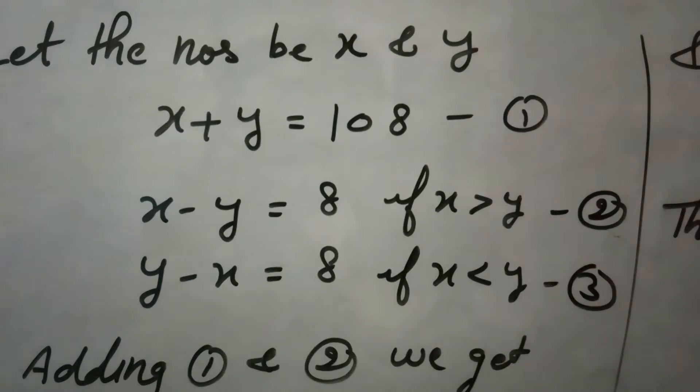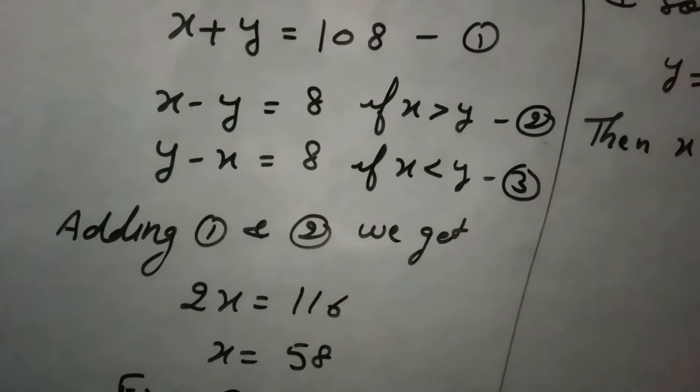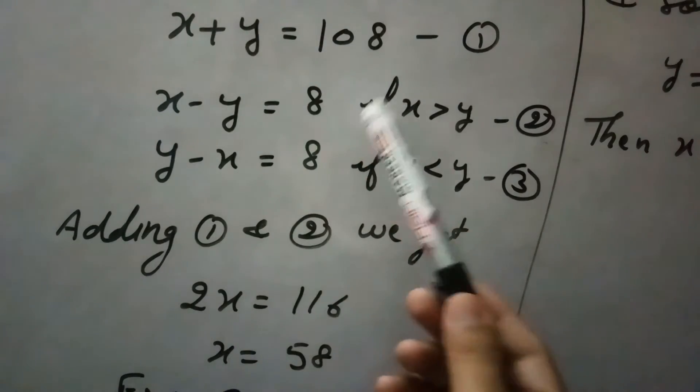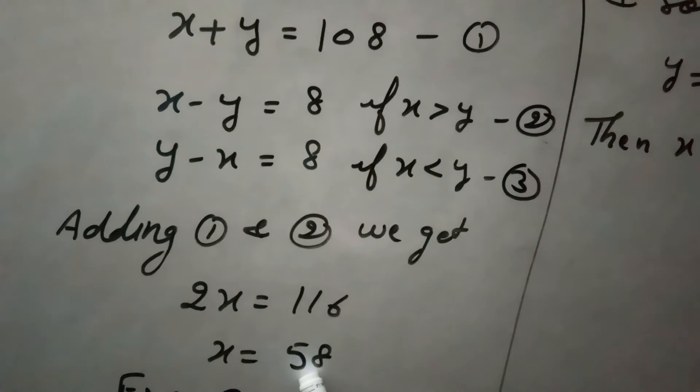Now if we solve equation 1 and 2, by adding these two equations we will get x equals 58, and then y we will get as 50.